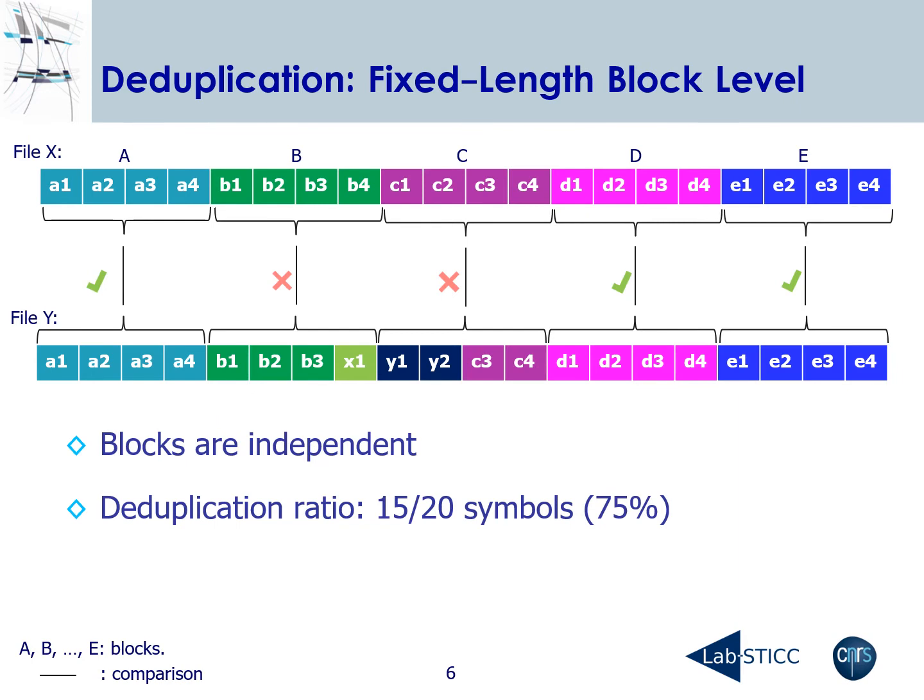In the case of fixed-length block level, blocks are independent, meaning deduplication can be done even if some blocks don't match. As we can see, comparing two files — file X and file Y — blocks B and C don't match the compared ones, but all matching blocks are deduplicated. So the deduplication ratios are better than at the file level.